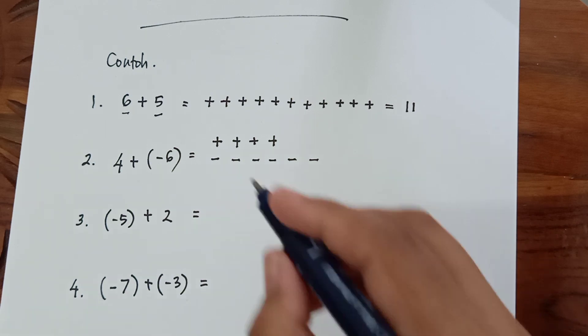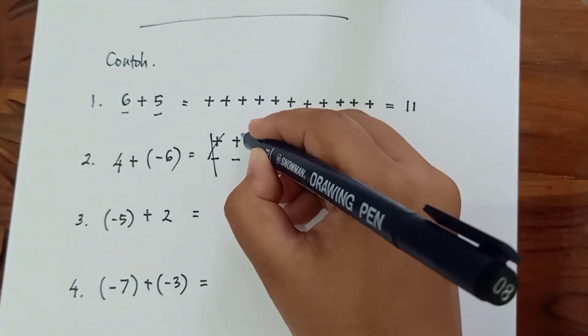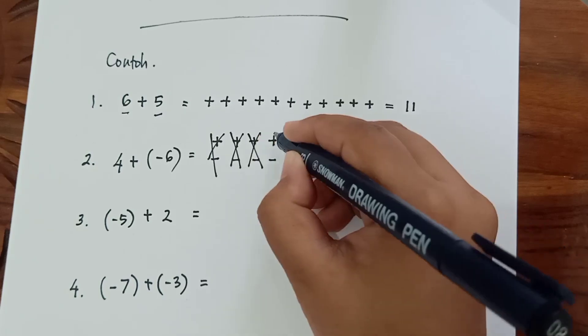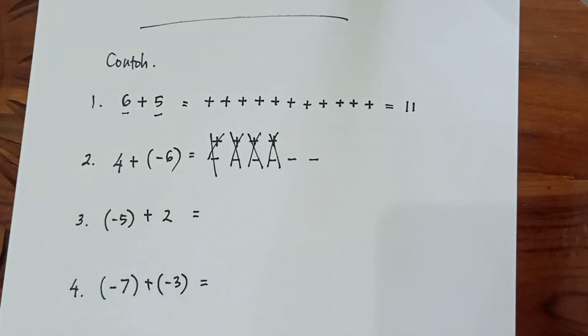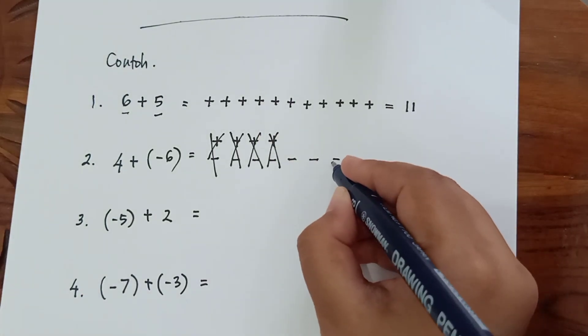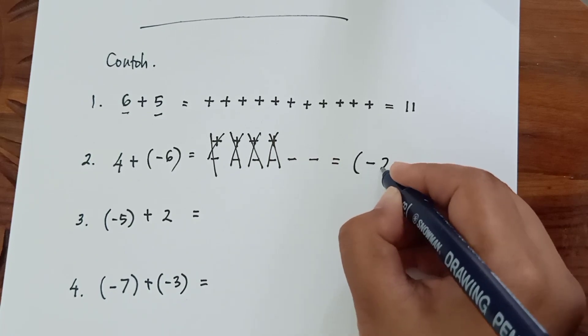Coret. Maka hasil 4 tambah negatif 6 adalah negatif 2. Sisa dari tanda yang tidak memiliki pasangan.